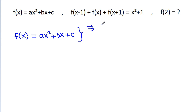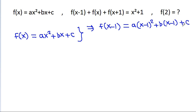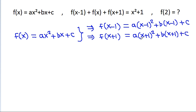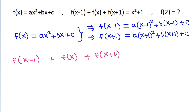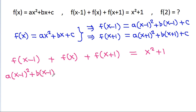So, f(x-1) will be equal to a times (x-1)² plus b times (x-1) plus c. And f(x+1) will be equal to a times (x+1)² plus b times (x+1) plus c. We have f(x-1) plus f(x) plus f(x+1) is equal to x² plus 1, and f(x-1) is a times (x-1)² plus b times (x-1) plus c.